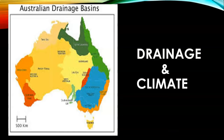Australia has two important natural features: the Artesian Basin and the Great Barrier Reef. The Artesian Basins are regions on the Earth's surface where water gushes out like a fountain. The Great Artesian Basin in Australia is the largest and deepest basin in the world. It is located west of the Great Dividing Range, in the arid and semi-arid parts of Queensland, New South Wales, South Australia, and the Northern Territory. It extends for 1.7 million square kilometers and is a major source of water in this region. The Great Barrier Reef is located in the northeast of Australia, along the east coast of Queensland in the Pacific Ocean. It is about 2,300 kilometers long and is one of the natural wonders of the world.